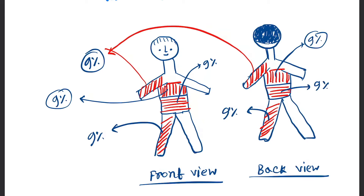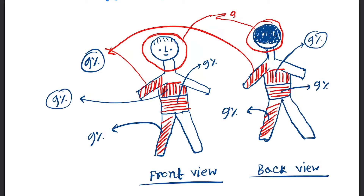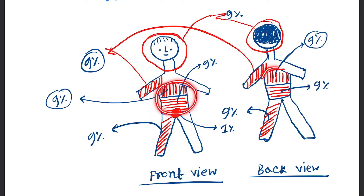Head and neck, containing both the back and front surface area, is nine percent. The perineum is one percent. If you calculate all of these — both limbs, chest and abdomen, head and neck, and the perineum — you will get one hundred percent of the body surface area.